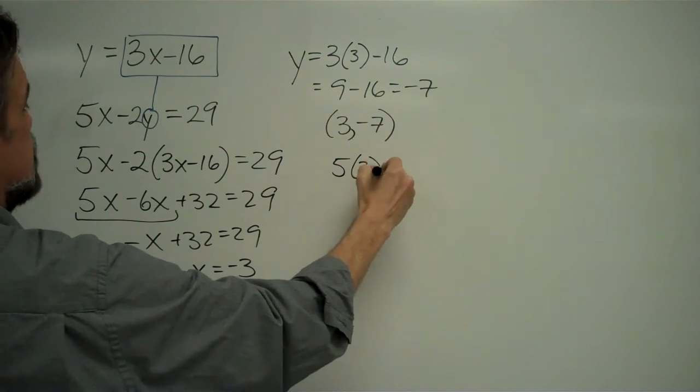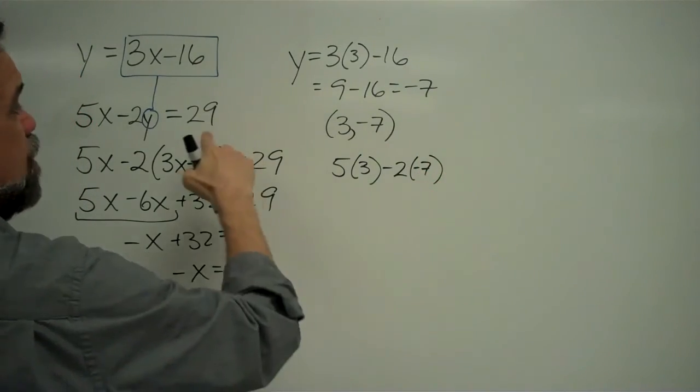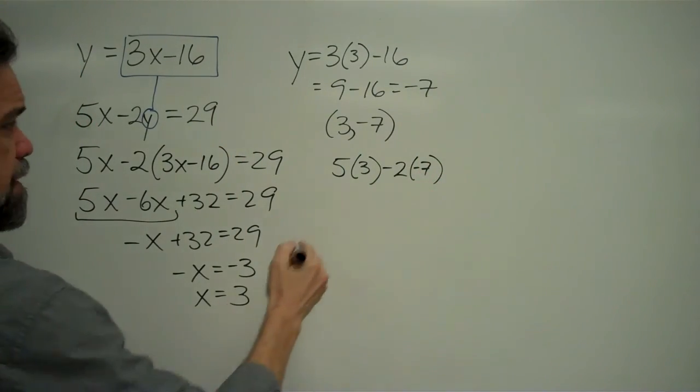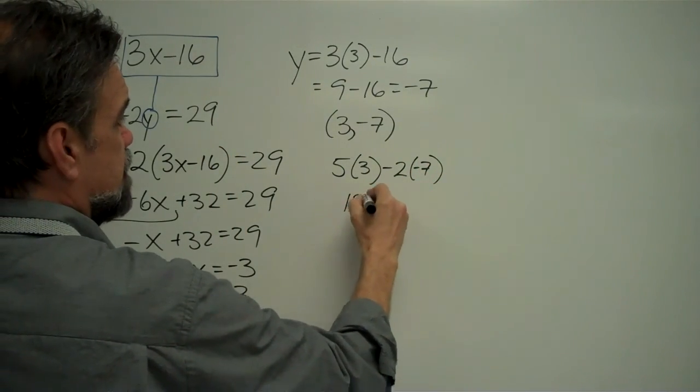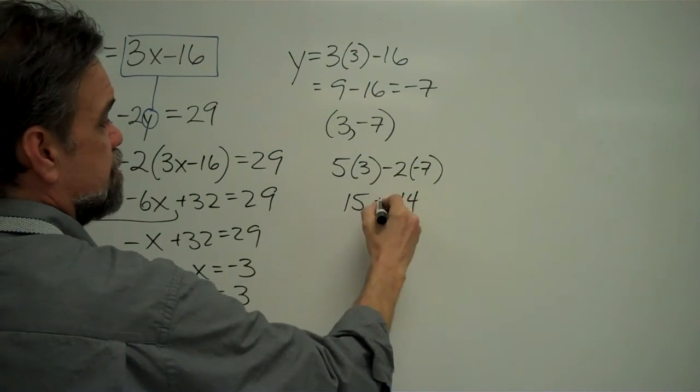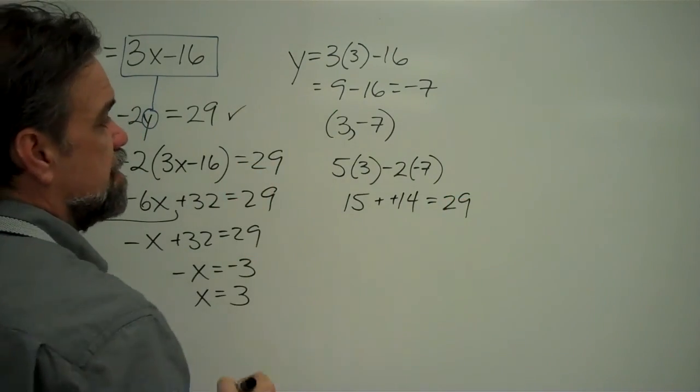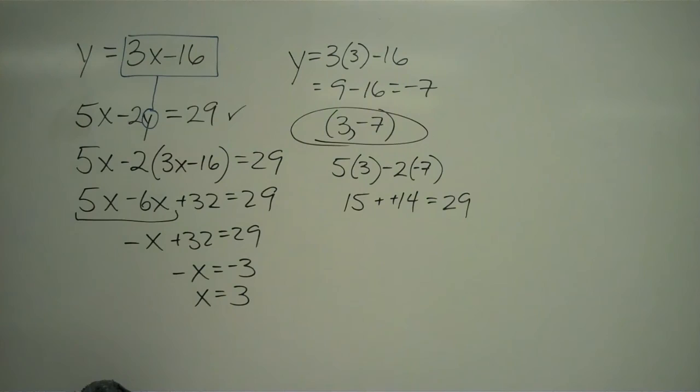So I get 5 times 3 minus 2 times negative 7, and hopefully that's going to give me 29. Let's see - it's going to be 15 minus negative 14, which is the same thing as saying 15 plus 14, which is 29. Yep it worked, so I know that this answer is correct.